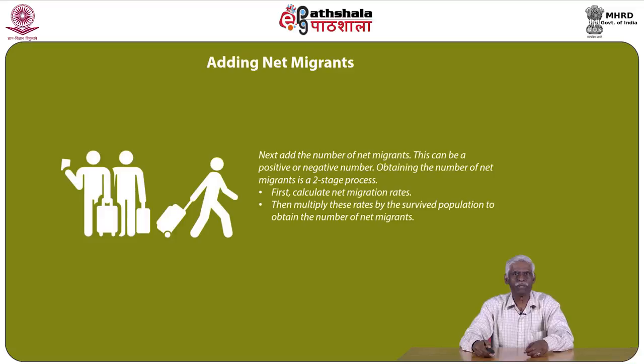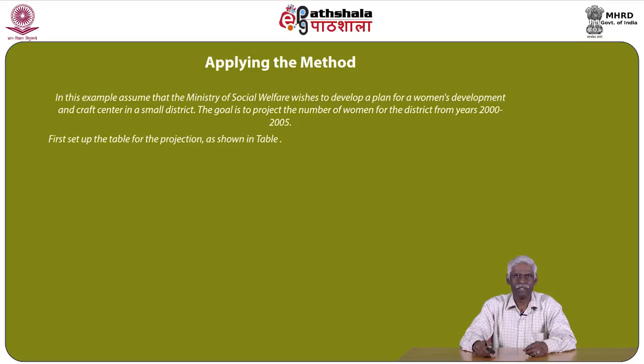The other major step is to add net migrants. Net migration can be a positive or negative number. Obtaining the number of net migrants is a two-stage process: first, calculate net migration rates, then multiply these rates by the survived population to obtain the number of net migrants.